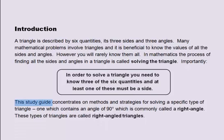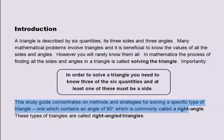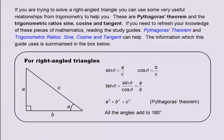This guide concentrates on methods and strategies for solving a specific type of triangle, one which contains an angle of 90 degrees, which is commonly called a right angle. These types of triangles are called right-angled triangles. If you are trying to solve a right-angled triangle, you can use some very useful relationships from trigonometry to help you.